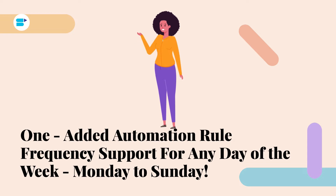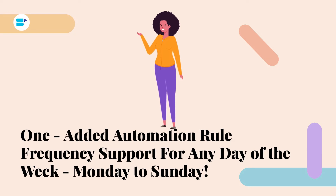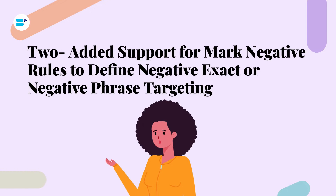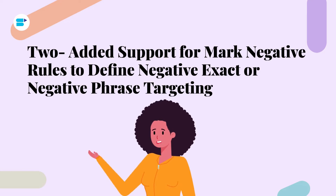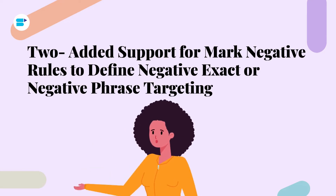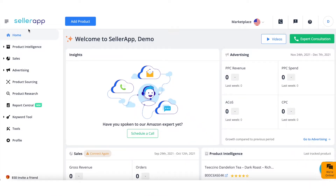We've also added exciting new features: first, functionality to support the frequency of when a rule is to be run — within the options of any specific day of the week, Monday to Sunday. Second, added support for mark negative rules to define negative exact or negative phrase targeting.